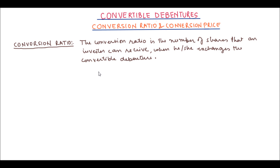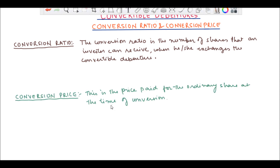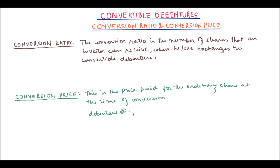Now let us look at the conversion price. Conversion price is the price paid for the ordinary share at the time of conversion. In the example given earlier, the amount paid for each debenture was 100 rupees and each share at the end of the tenure would be 50 rupees. So conversion ratio is equal to 100 divided by 50, which is equal to 2, and the conversion price is rupees 50.